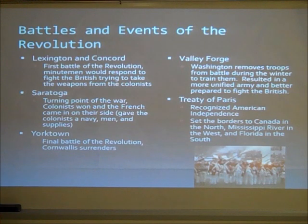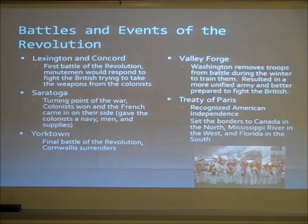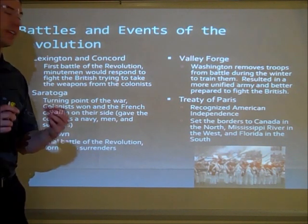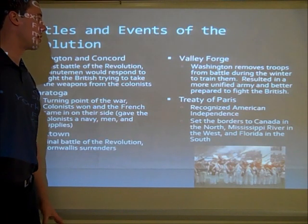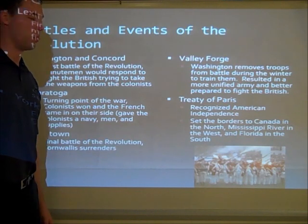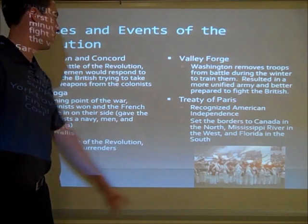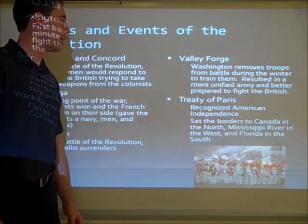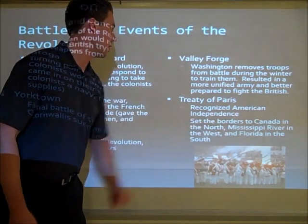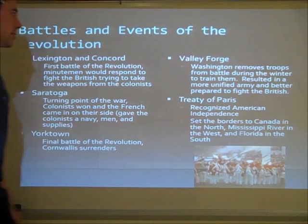When the war was over after the Battle of Yorktown, we signed the Treaty of Paris. This treaty recognized American independence — we were recognized as an independent country for the first time. It also set the borders of America: the north was still Canada, to the west the border was the Mississippi River, and Florida was the border in the south, still controlled by Spain at this time.